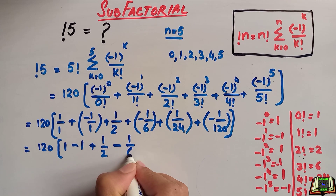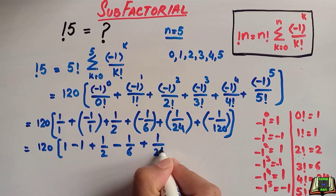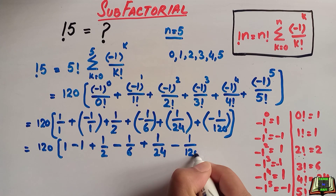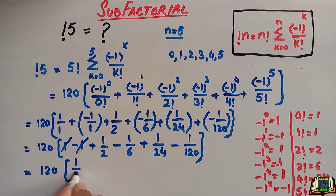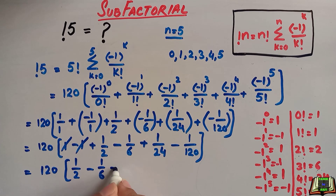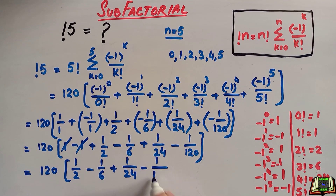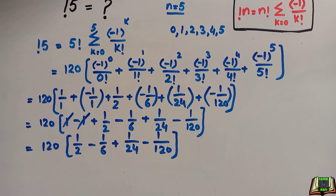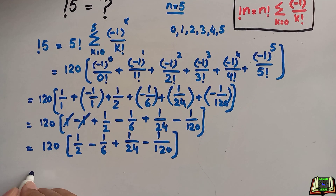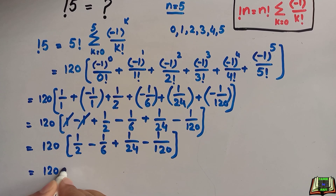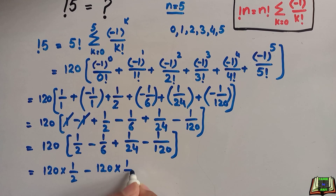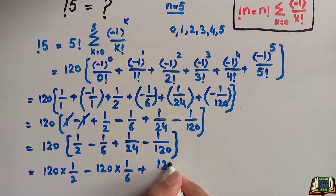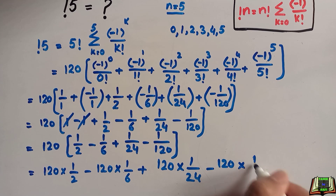We are left with 120 times (1 over 2 minus 1 over 6 plus 1 over 24 minus 1 over 120). In the next step we multiply 120 through all the values inside the bracket: 120 times 1 over 2, minus 120 times 1 over 6, plus 120 times 1 over 24, minus 120 times 1 over 120.